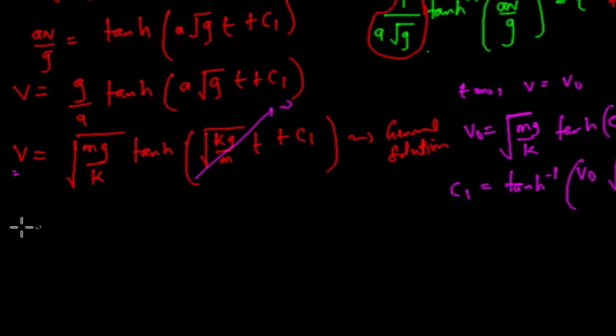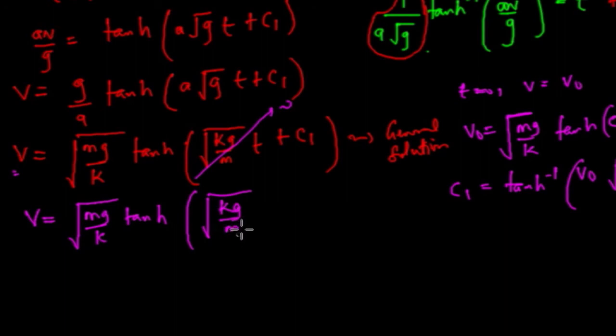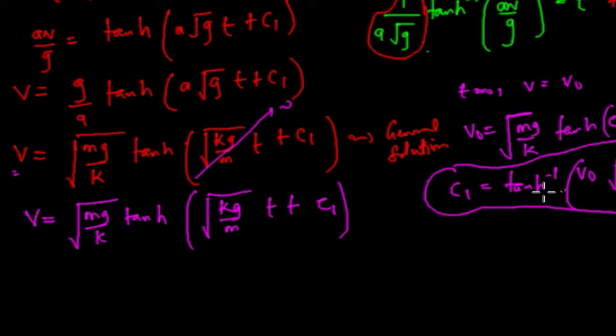So now we don't have any arbitrary constants now. So therefore, the final solution, that is the particular solution, that would just be v equals the root of mg over k tan hyperbolic of root of kg over m t plus c1, where our c1 is this. And this is going to be the particular solution for question 1.